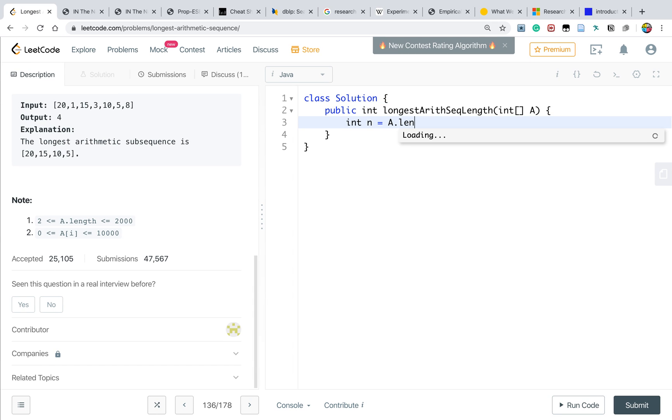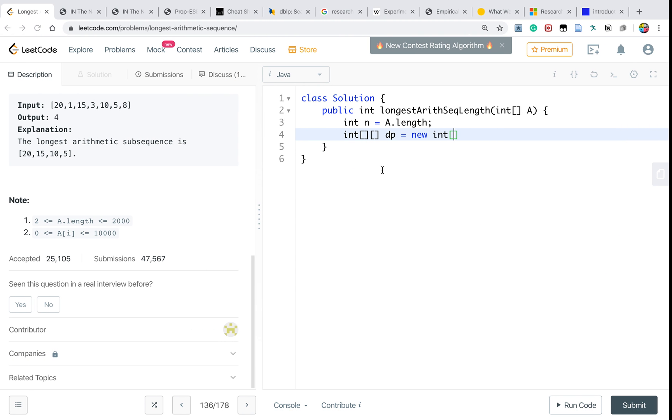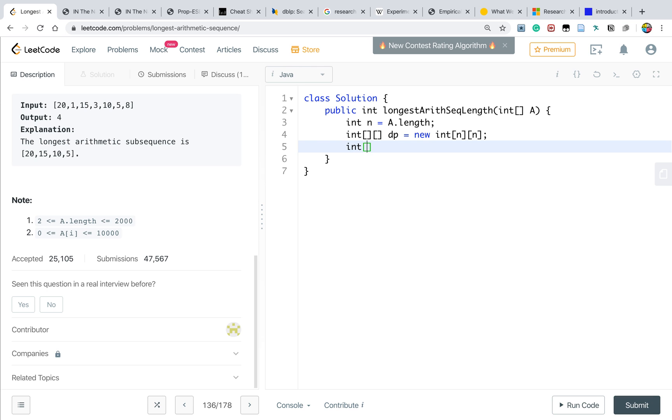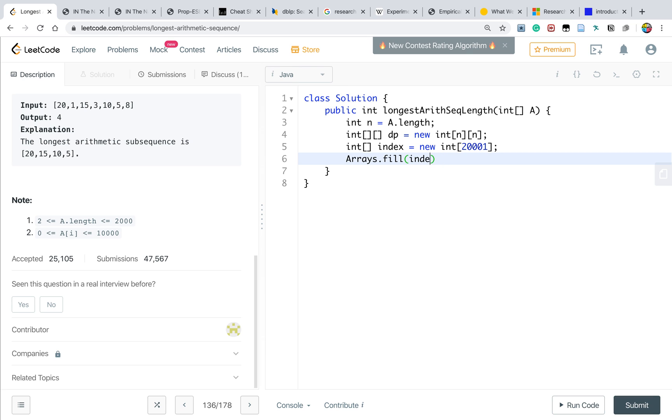We get the n of this array. And we also need a dp array. What about the size of the dp array? As the dp array represents the position in the array A, the size would just be n times n. And we also need an index array. The worst case is the middle element has the largest value and the third element has the minimum value. So the scope would just be 20,001, right? Yeah. Okay. And we should initialize this index array to negative 1.